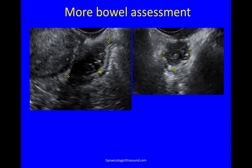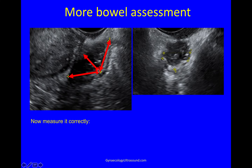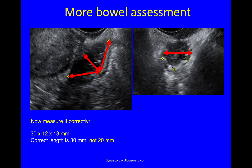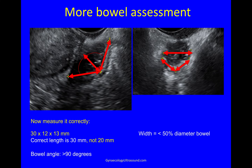Now we need to measure it properly because you can see there's an angle here — we just measured it roughly before. But now we need to measure it along the length of the bowel. When measuring depth, be careful just to measure the muscularis. You can see it's actually 30 millimetres, not 20 as we originally measured it. And then the width measurement — you can see it's less than half of the circumference of the bowel. And if you look at the angle of the bowel, it's more than 90 degrees.